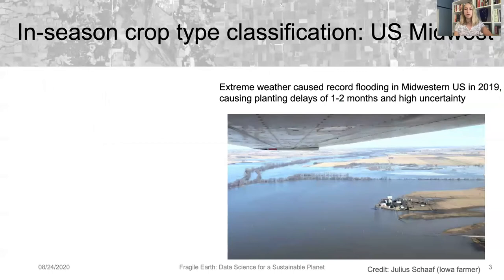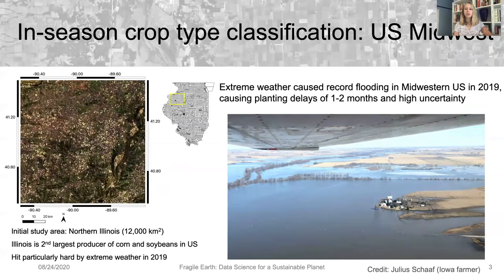One scenario that emphasized both of these challenges was the 2019 growing season in the U.S. Midwest, where record flooding caused planting delays of one to two months and resulted in high market uncertainty about crop conditions. In our study, we focused initially on an area of Northern Illinois spanning about 12,000 square kilometers, since Illinois is the second largest producer of corn and soybeans in the United States and it was hit particularly hard by flooding in 2019.